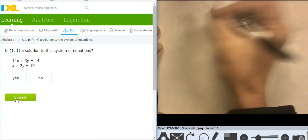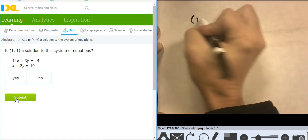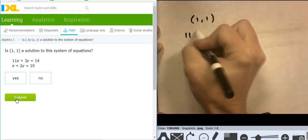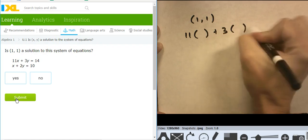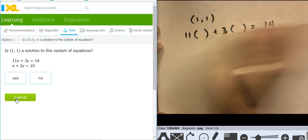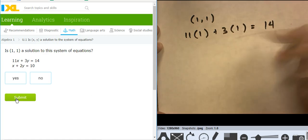All right. So I'm testing (1, 1). So I have 11x plus 3y equals 14. 11x plus 3y equals 14. Does that work? Yes. 11 plus 3 is 14.